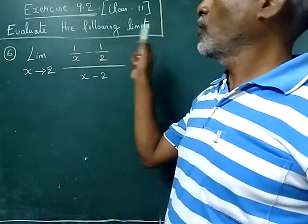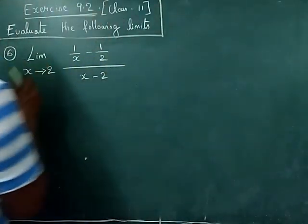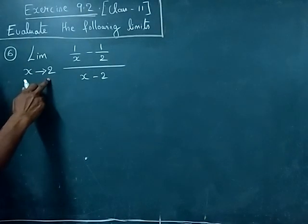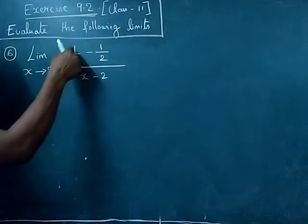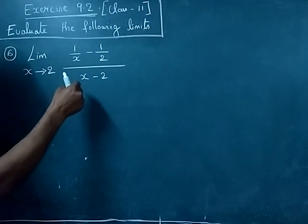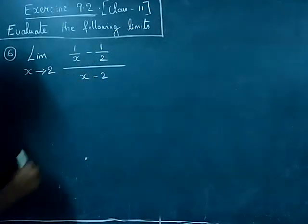Evaluate the following limit. Limit x tends to 2, the numerator term is 1 by x minus 1 by 2 divided by x minus 2.